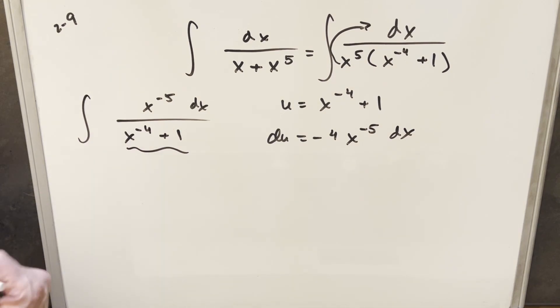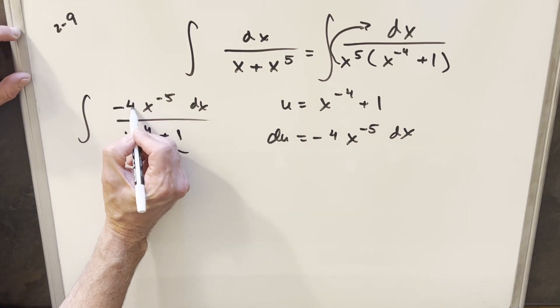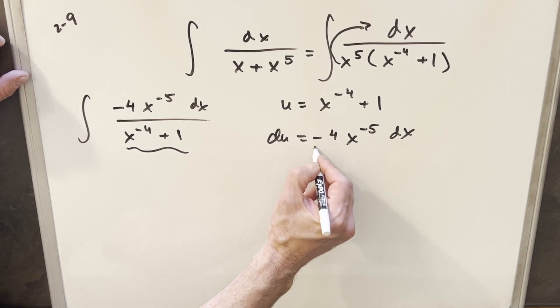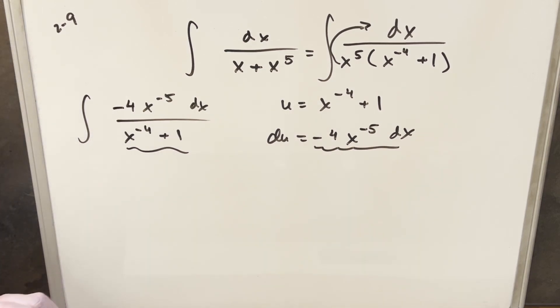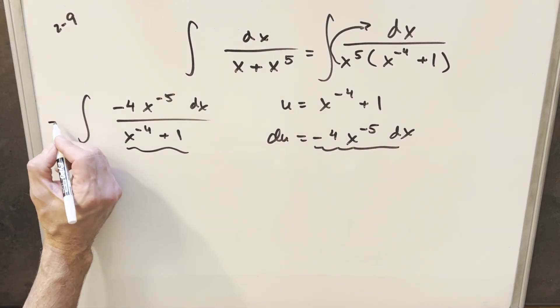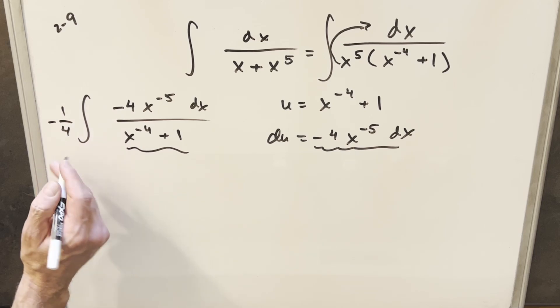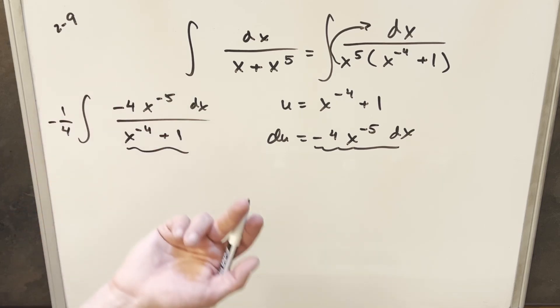Then from here, if I multiply by minus four right here, now I have exactly what we have for our du value. But in order not to change it, we'll just multiply by minus one fourth. Multiplying these together, we're just multiplying by one.